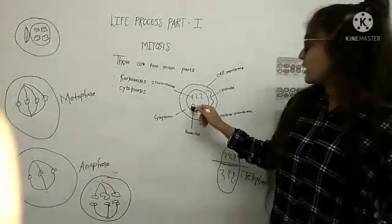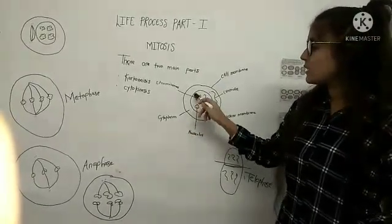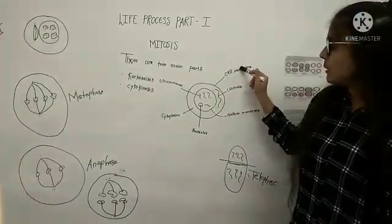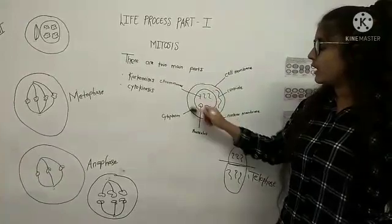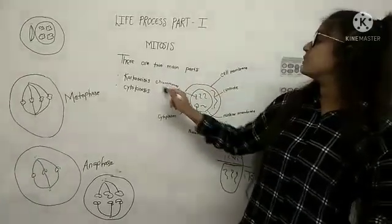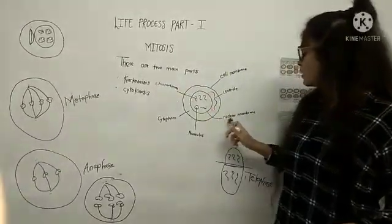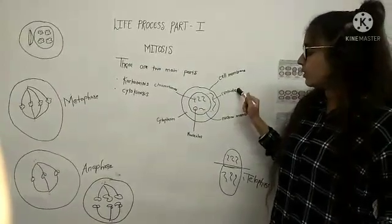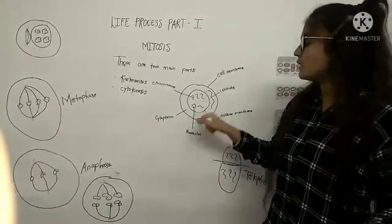In prophase, in this diagram, as you can see, this is the cell membrane. The main inner part is cytoplasm. This is chromosomes and this is nuclear membrane. This is the centriole, and this is the nucleus.